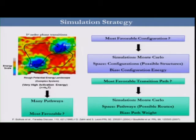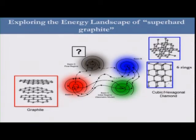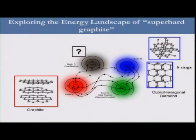In Transition Path Sampling, instead of making a random walk in the space of configurations, we perform the walk in the space of pathways, and we bias the search toward the pathway in order to converge quickly to the real transition mechanism. One important question is that the method requires the starting and ending phases A and B to be known. However, here we would like to explore the energy landscape of super-hard graphite, and the endpoint phase is precisely what we want to determine.